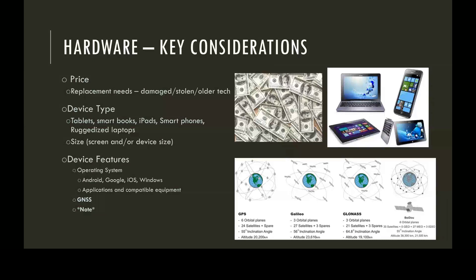Smartphones would also be easy to integrate into the field, while ruggedized laptops fit into situations where data collection is in a fixed location, like a pit-tagging trailer, weir, or screw trap. Keep in mind that you'd want to try and stick with one device type. Implementing multiple devices may cause issues if forms are designed to be viewed in a specific way. Device Features: The features you'll want to weigh most are operating systems and satellite capabilities, especially if your data is collected in remote locations. Common operating systems include Android, iOS, and Windows.